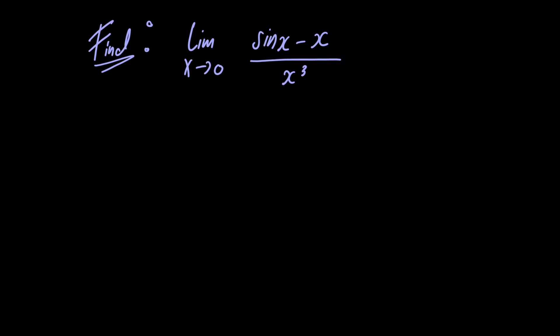Now, if we were to just let x tend to 0, in the numerator we would have sin of 0 minus 0, and this is equal to 0 as sin of 0 equals 0. And in the denominator we would have 0 cubed, which is also equal to 0.